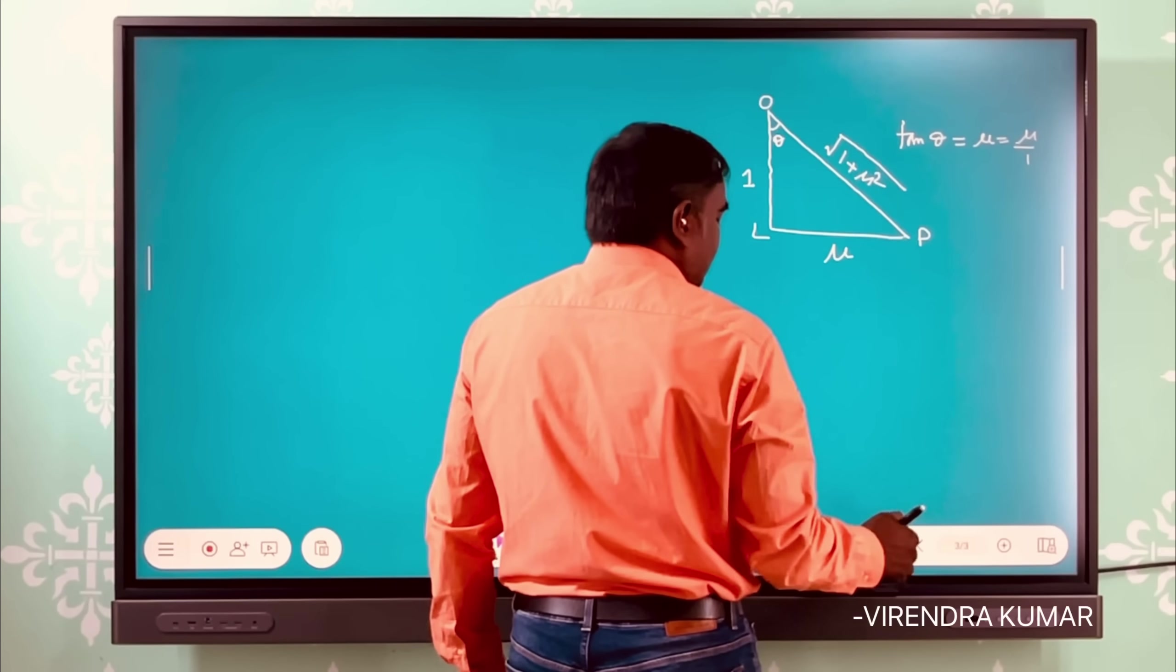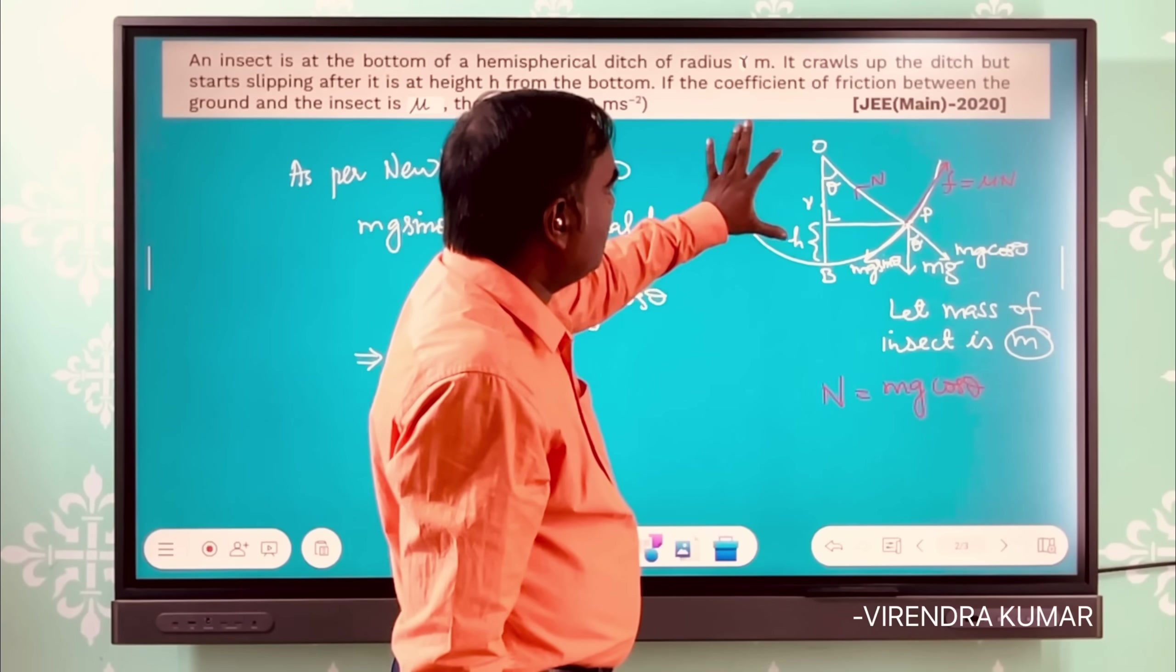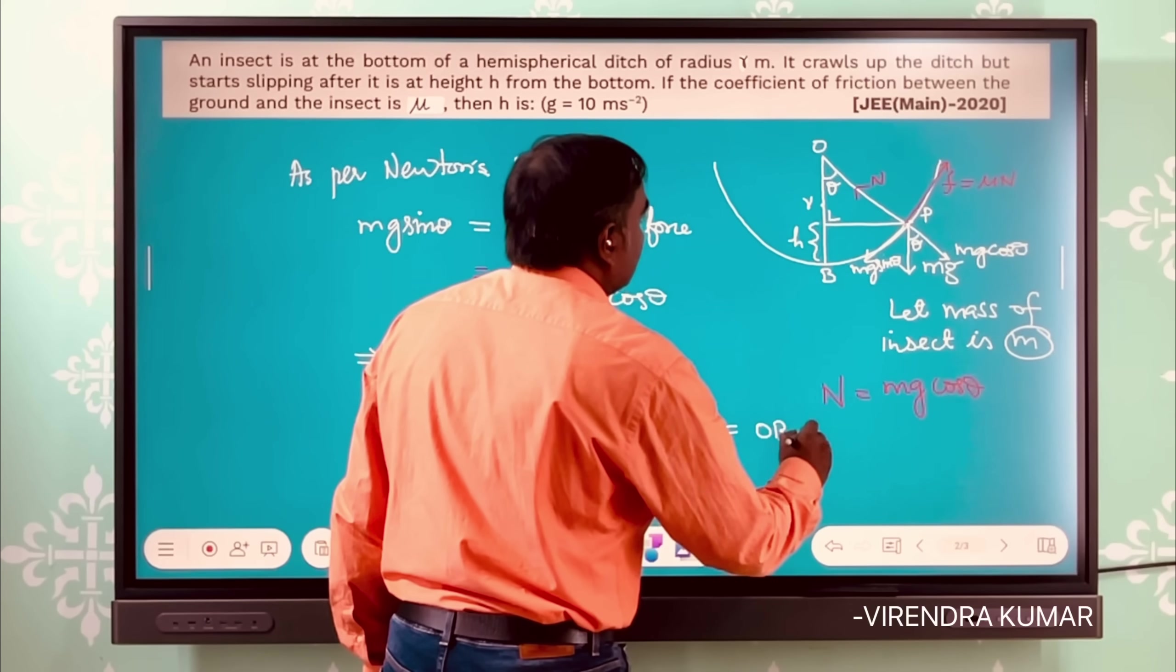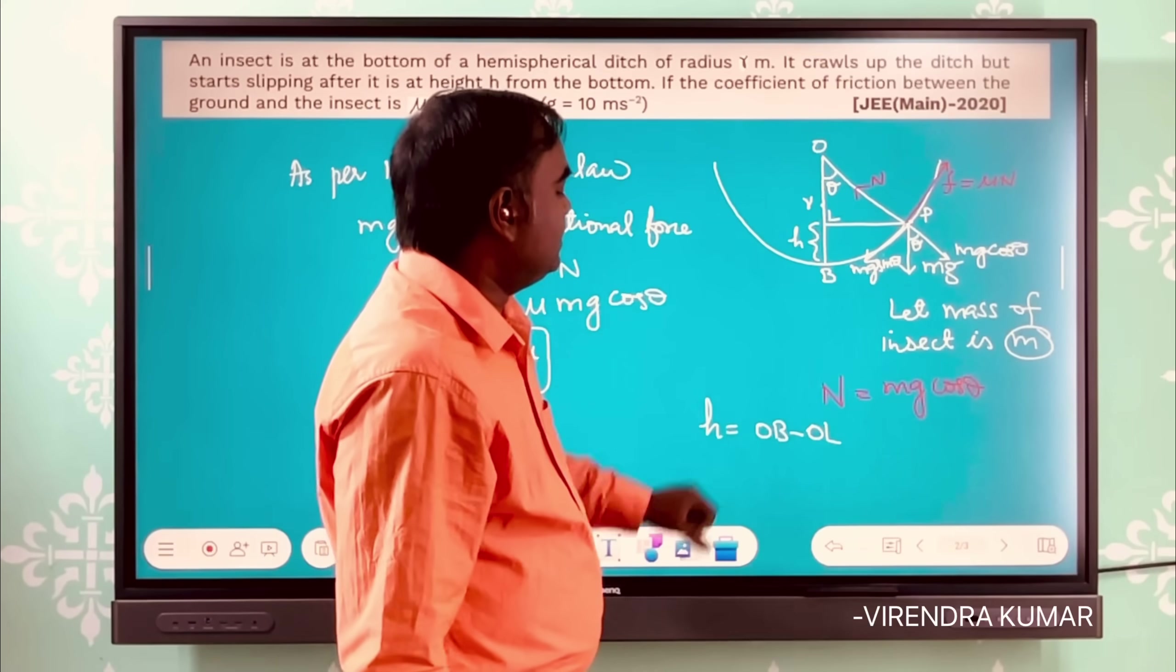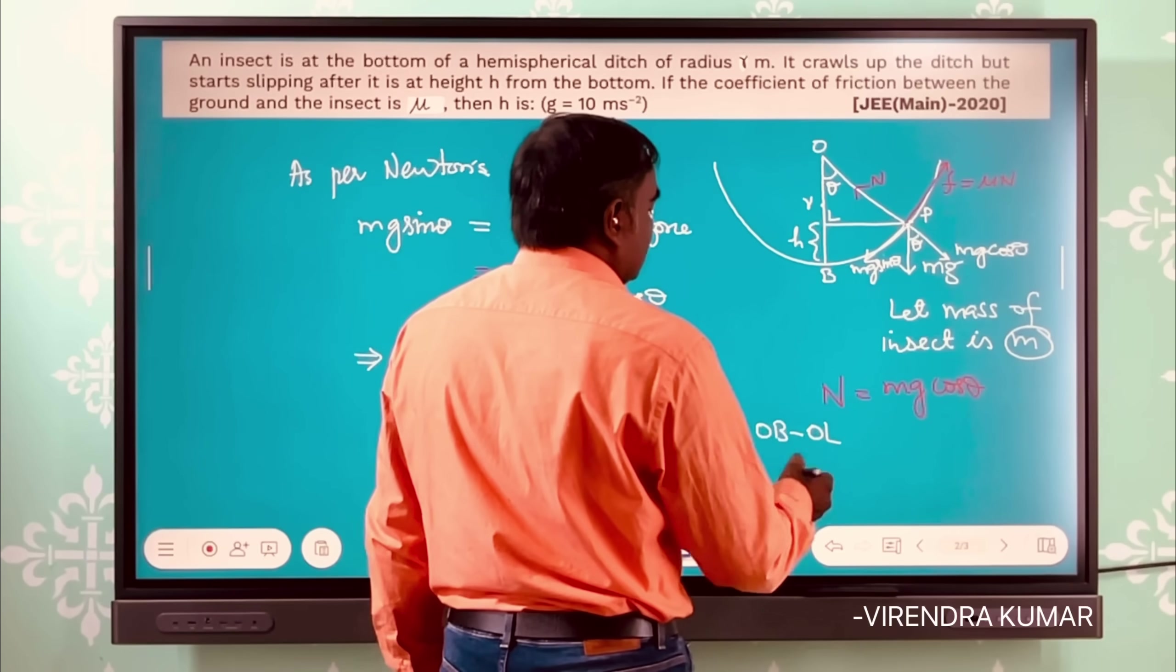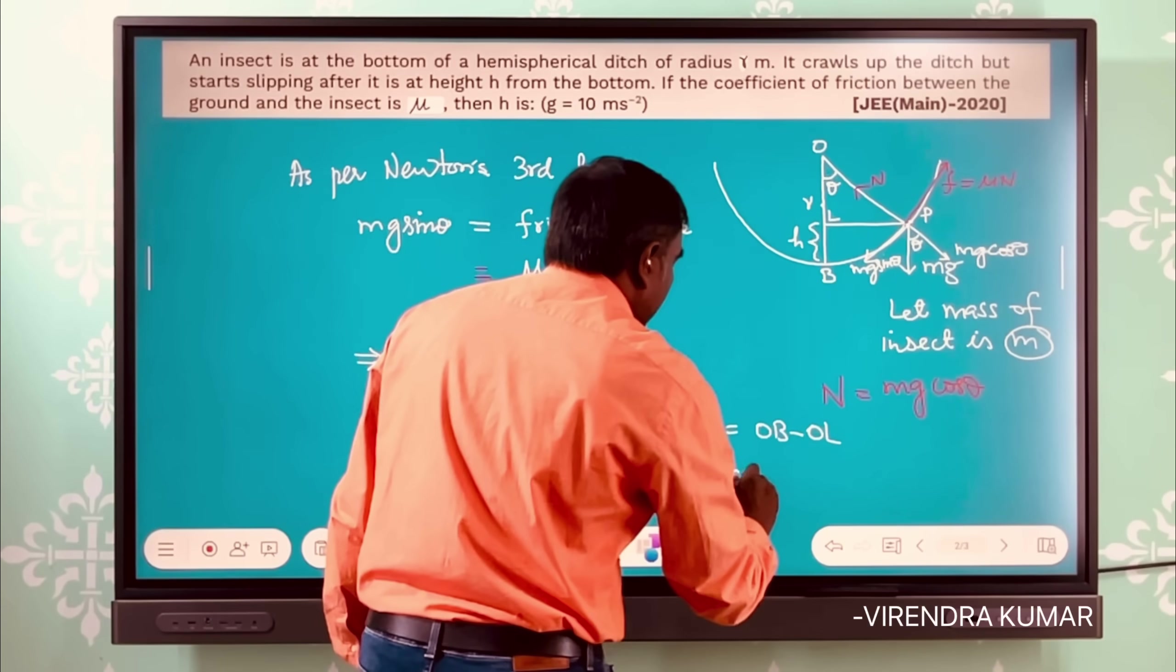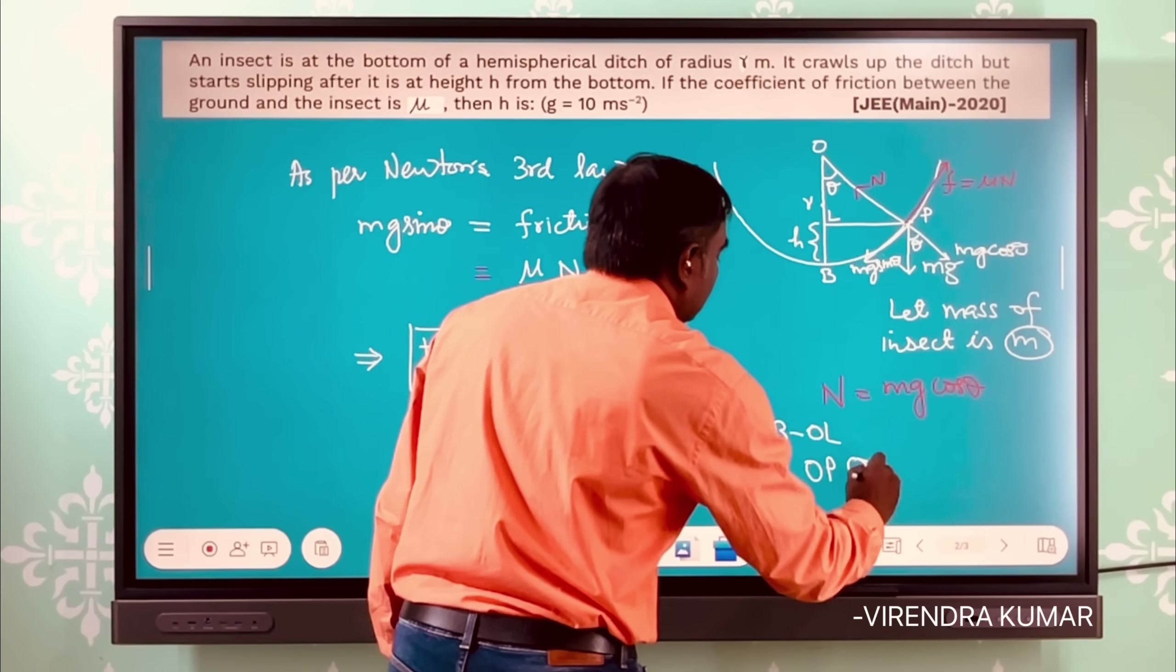That means we can get the other expression. What we need - so h is equal to whole OB minus OL. Our distance h is equal to OB minus OL. And now if we can find the OL distance then we can get the value of h, because OB is equal to r. So OL is OP cos θ.